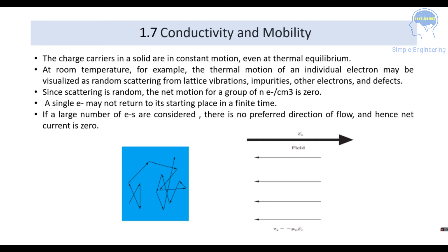Conductivity and mobility. The charge carriers in a solid are in constant motion even at thermal equilibrium. At room temperature, for example, the thermal motion of an individual electron may be visualized as random scattering from lattice vibrations, impurities, other electrons, and defects. In this figure you can see the individual electron that is moving — these are the charge carriers in that solid, and they are in constant motion.